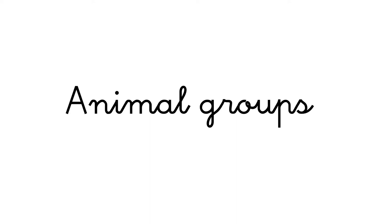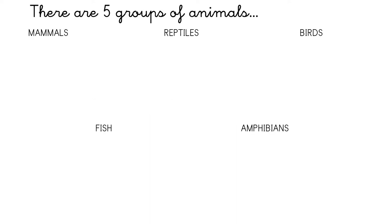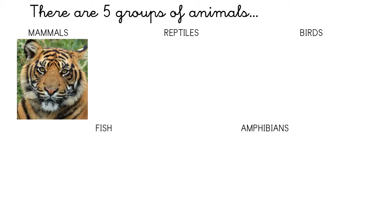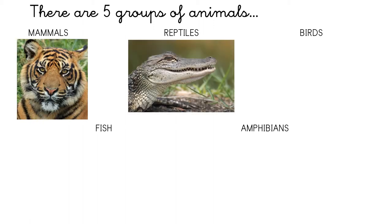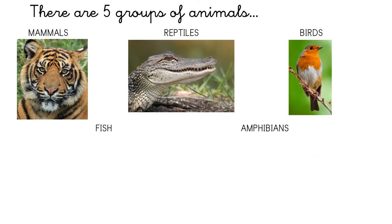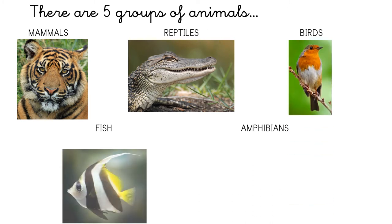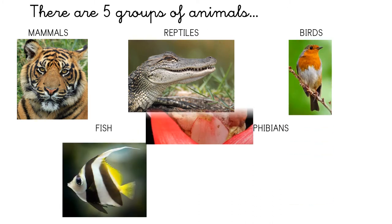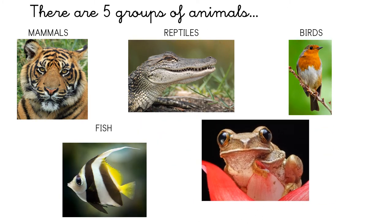Animal groups. There are five groups of animals: mammals, reptiles, birds, fish, and amphibians.